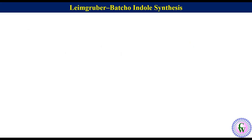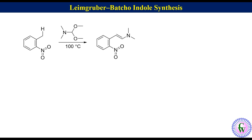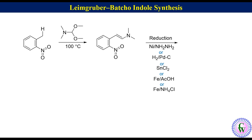It is a two-step process in which ortho-nitrotoluene or its derivative reacts with dimethoxy dimethylmethanamine under heating condition to produce enamine, which in the next step of reduction with Raney nickel and hydrogen, or H2/Pd-C, or SnCl2, or iron/acetic acid, or iron/ammonium chloride produces indole.